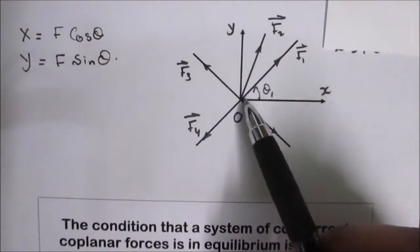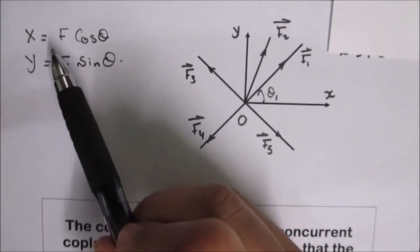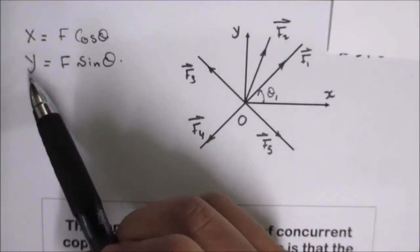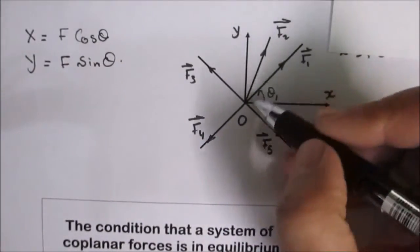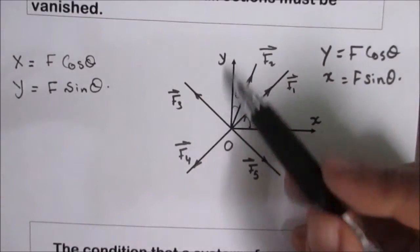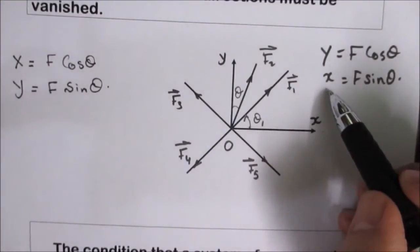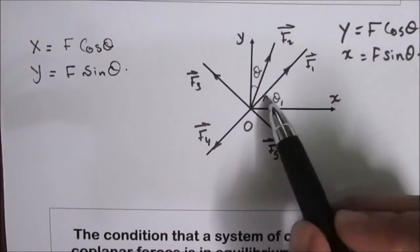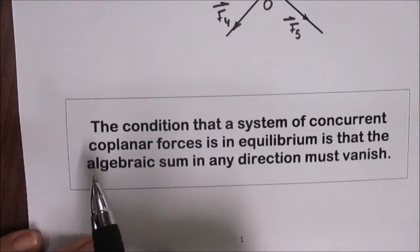If given the angle of inclination of the force to the x axis, then the component of the force in the x direction is F cosine theta, and the component in the y direction is F sine theta. But if given the angle of inclination of the force to the y axis, then the component in the y direction is F cosine theta, and the component in the x direction is F sine theta. So the component adjacent to the given angle takes the cosine and the other component takes the sine.